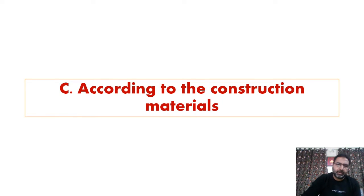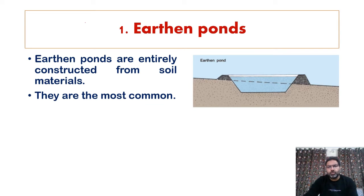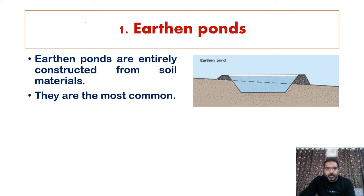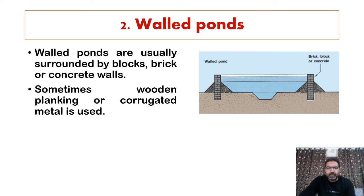The third main category is ponds classified according to construction material. Earthen ponds are entirely constructed from soil materials and are the most common type.